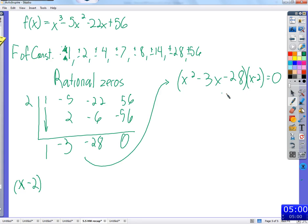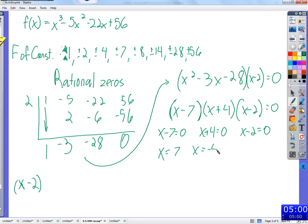So what would be the next thing we do from here? Factor this x squared minus three x minus 28. X minus seven, x plus four, and there's x minus two, zero. In order to multiply three things together, we get zero, this has to be zero, and this has to be zero, or this has to be zero. So x would be seven, or negative four, or the two that we already found, but those are our three zeros.